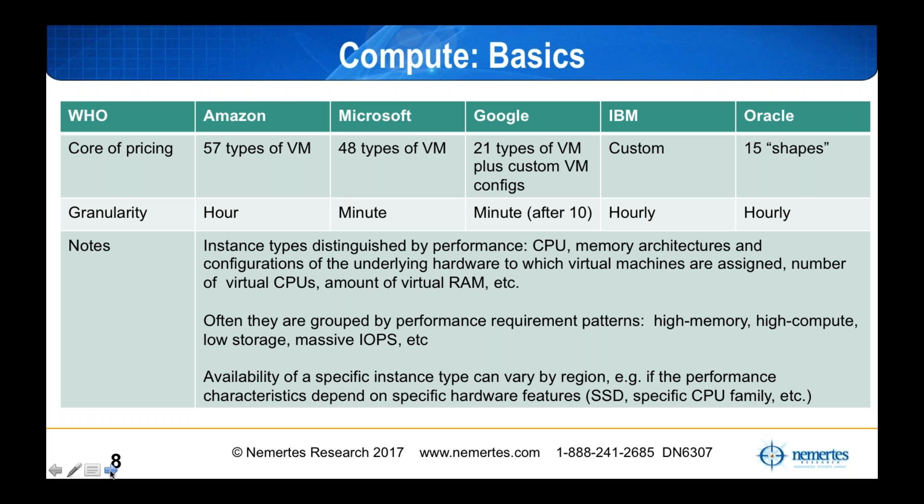If you look at the core of the pricing: Amazon has 57 different kinds of virtual machines, Microsoft has 48, Google has 21 plus custom configs, IBM has a portfolio of custom configs, and Oracle has 15 shapes — its term for VM. So comparing like for like already got hard, and we're just at the first line item of the comparison. Then there's billing granularity: Amazon bills by the hour, Microsoft by the minute, Google by the minute after the first 10.